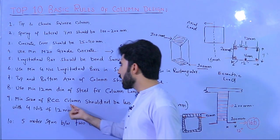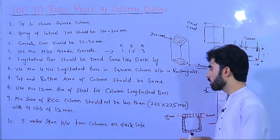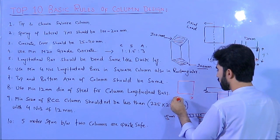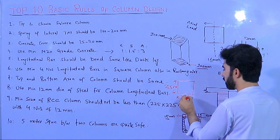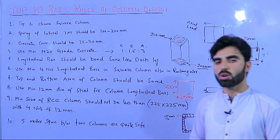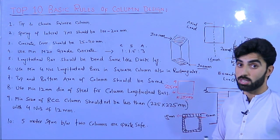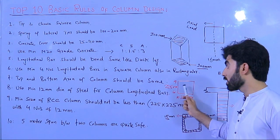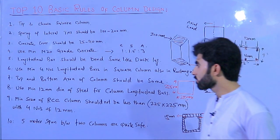The ninth basic rule: the minimum size of an RCC square column should not be less than 225 mm by 225 mm. If your structural design calls for 200 mm or 150 mm, you should still select 225 mm, as anything smaller cannot adequately support the structural load.